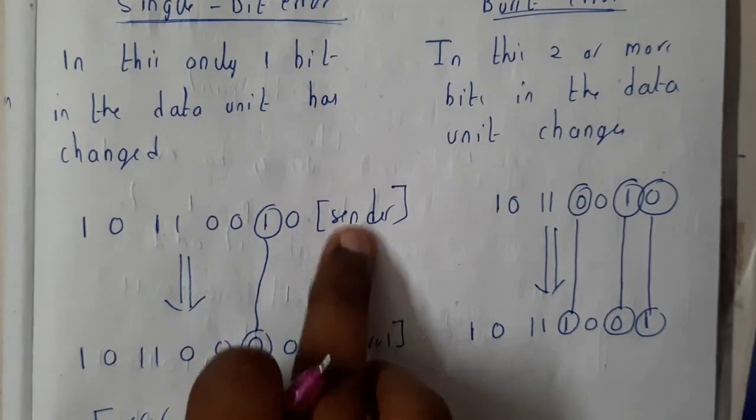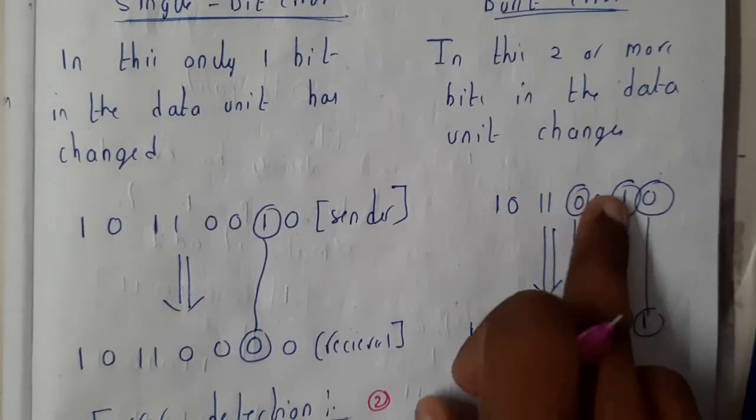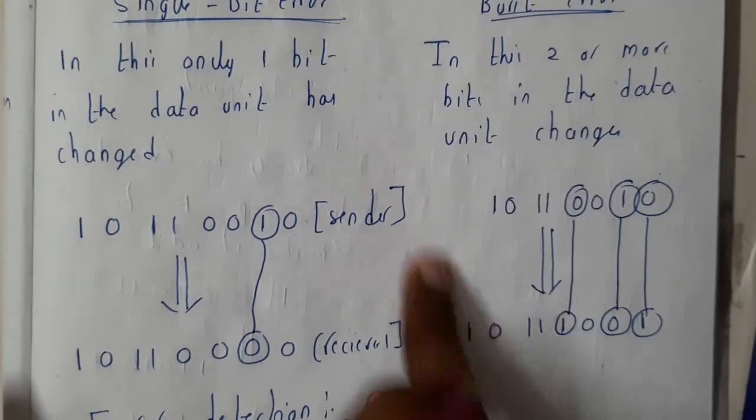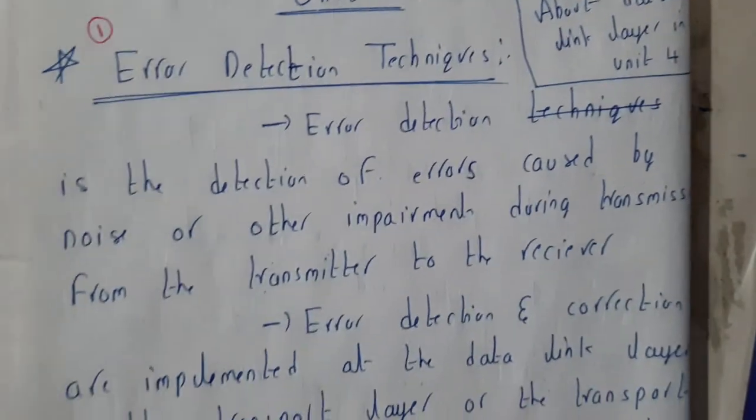Here the zero changes to one, this one changes to zero, and this zero changes to one. So this is burst error. Now let us go through error detection techniques, and in the next tutorial we will be going through them one after the other.